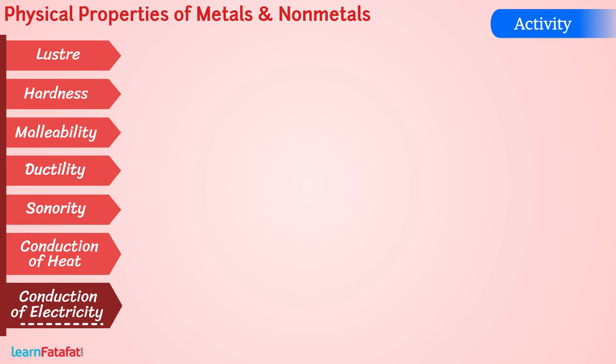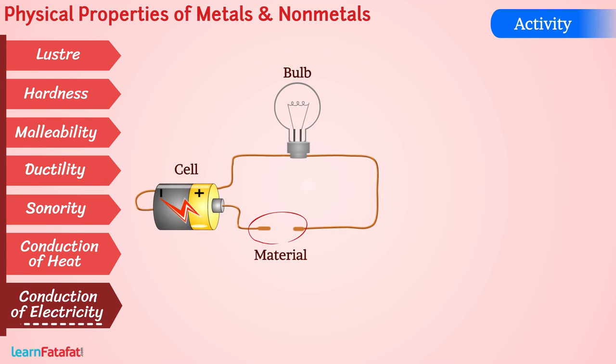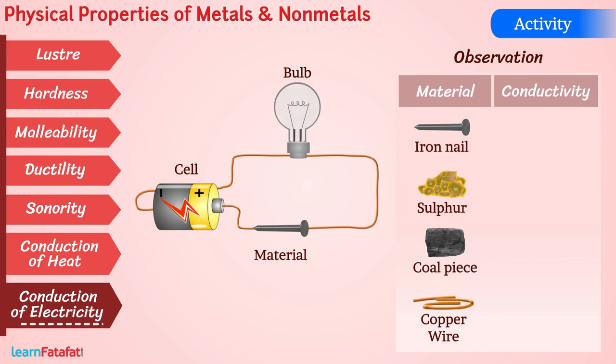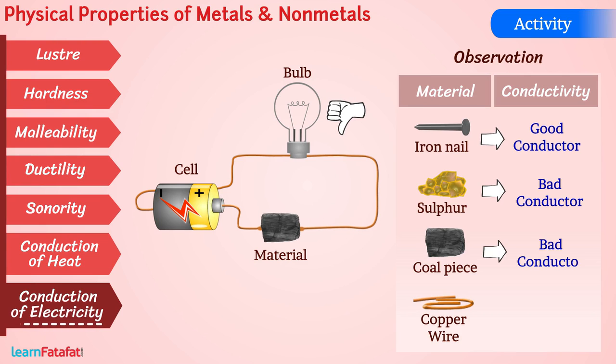Conduction of electricity: Let's perform another activity. Connect the circuit as shown and check if the bulb lights or not. Repeat for other materials. Observations: Iron nail is a good conductor. Sulfur is a bad conductor. Coal piece is a bad conductor. Copper wire is a good conductor.